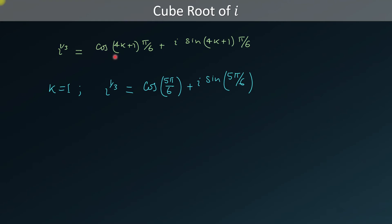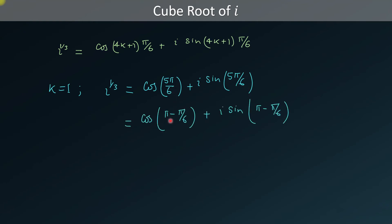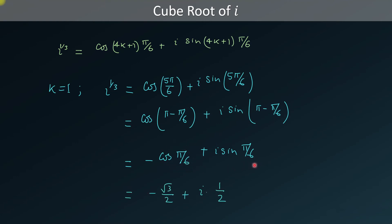For k = 1, it will give us another cube root of iota. Iota to the one-third is equal to cosine(5π/6) + i·sine(5π/6). We can write 5π/6 as π − π/6, which gives us −cosine(π/6) + i·sine(π/6). Again, we substitute the values of cosine(π/6) and sine(π/6) to get this cube root.